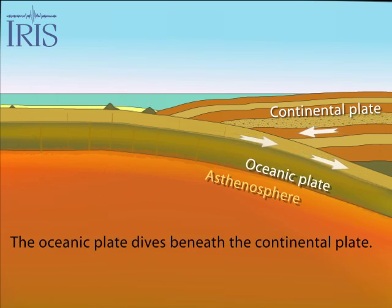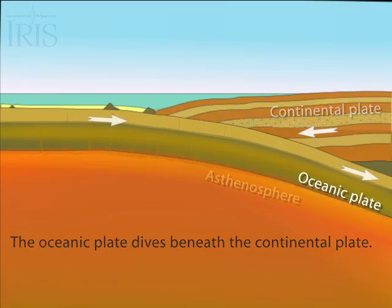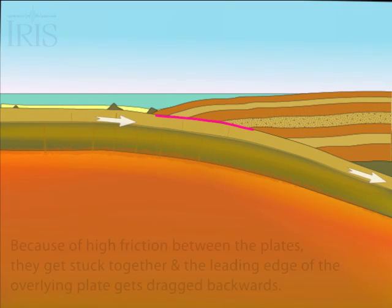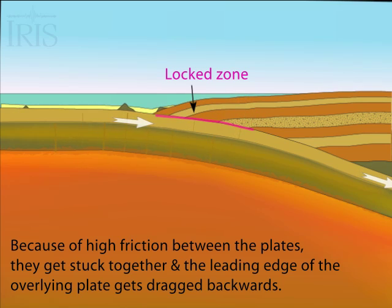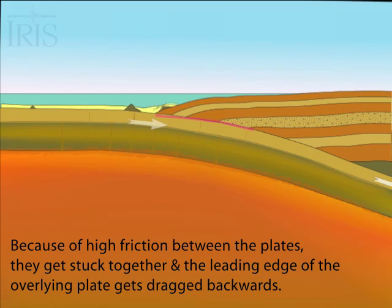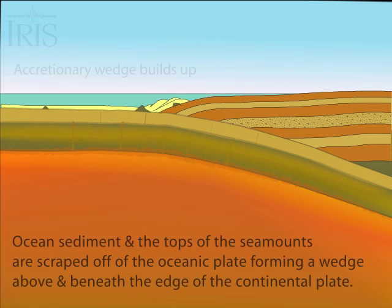In a subduction zone, the thinner yet denser oceanic plate dives beneath the continental plate. The continental plate is locked to the subducting plate by immense friction along the shallow portion of a vast sloping fault surface. GPS data for many subduction zones show that the friction indeed causes the leading edge of the overlying plate to be forced backwards.